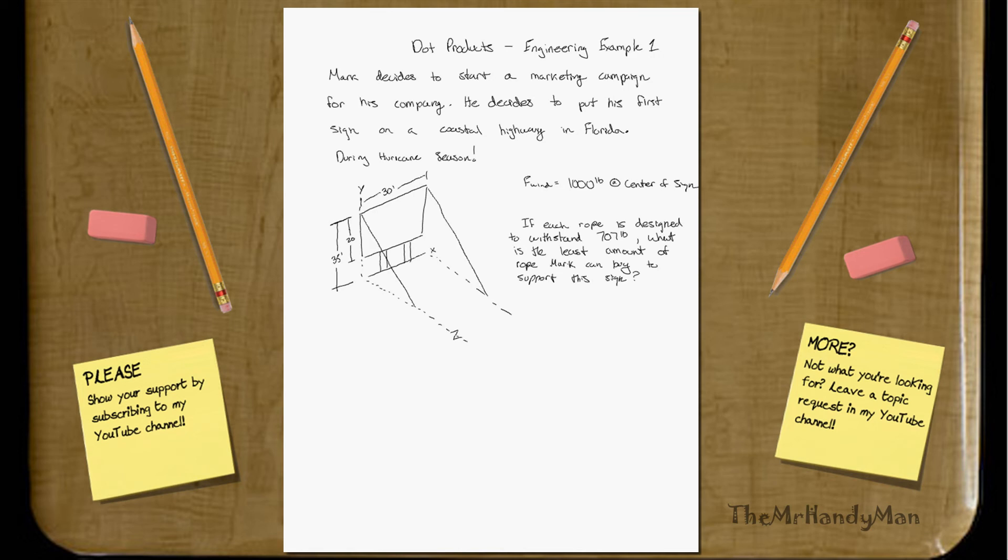Mark decides to start with a marketing campaign for his company. He decides to put his first sign on a coastal highway in Florida during hurricane season. Some things to note is that the force of the wind is 1,000 pounds at the center, so right there. And if the rope is designed to withstand 707 pounds, what is the least amount of rope Mark can buy to support his sign?